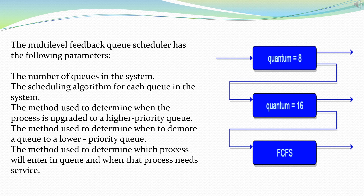The multi-level feedback queue scheduler has the following parameters: the number of queues in the system; the scheduling algorithm for each queue in the system; the method used to determine when a process is upgraded to a higher priority queue; the method used to determine when to demote a process to a lower priority queue; and the method used to determine which process will enter a queue and when that process needs service.